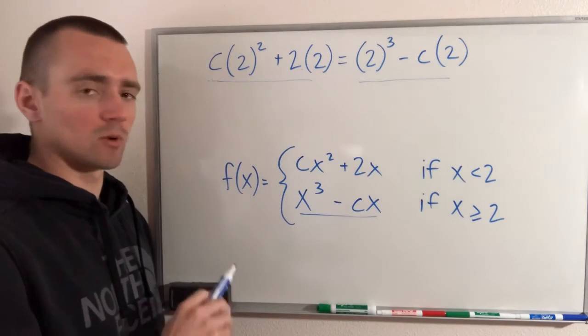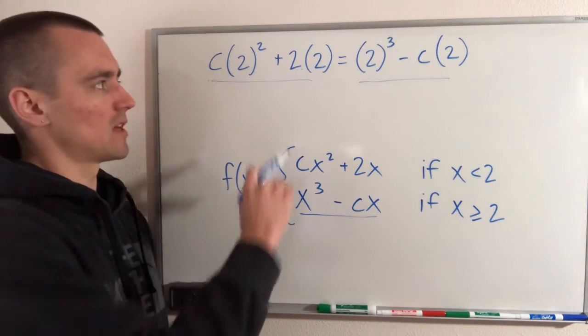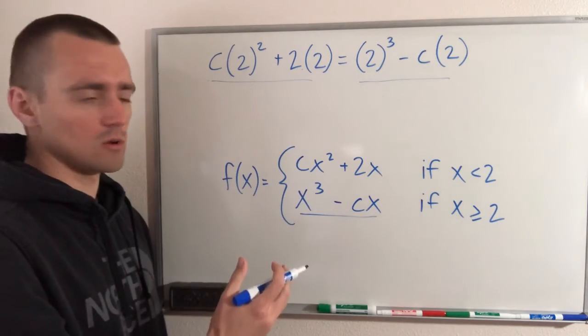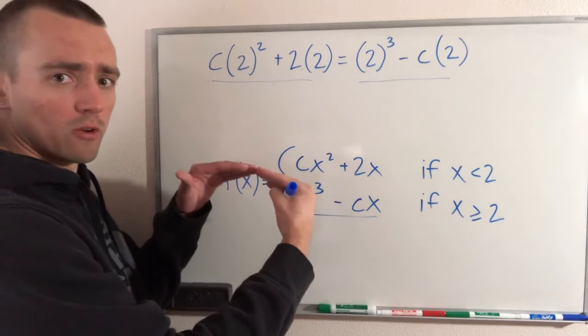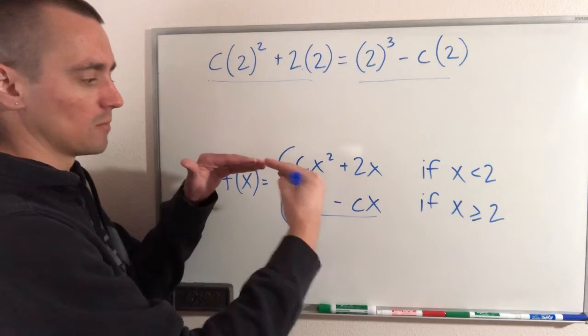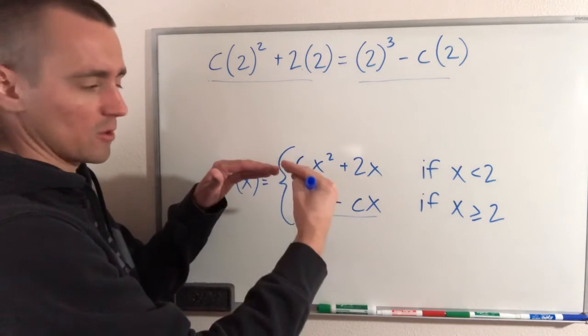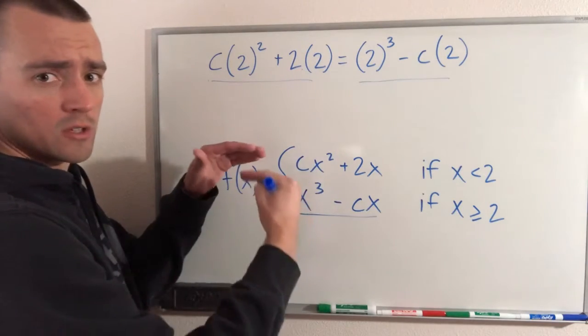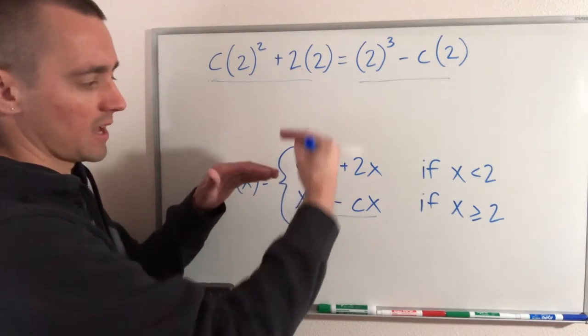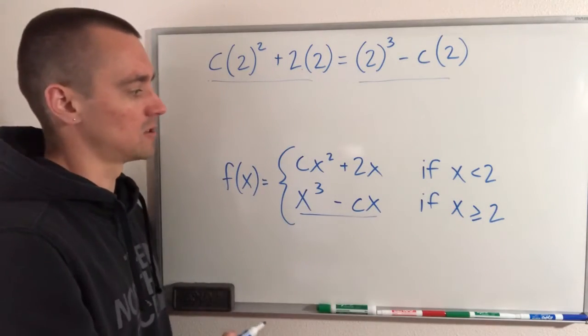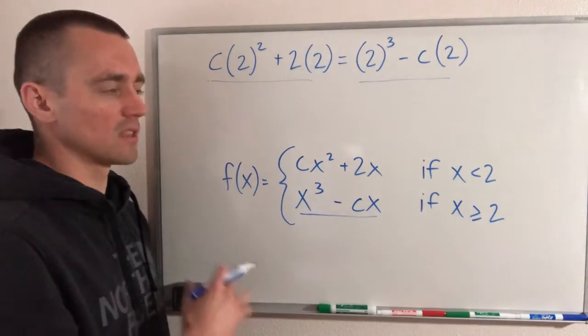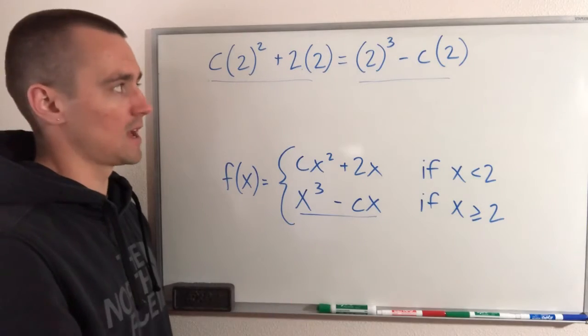So the reason why this works is it makes sure that these two functions have the same y value when x is 2. And if they do have the same y value, when we go from one function to the other, they'll line up and we'll be able to smoothly go from one to the other without jumping up or down. So if they don't have the same y value at x equals 2, we're going to jump from one to the other when we get to x equals 2. So doing this ensures that they have the same output when x is 2.